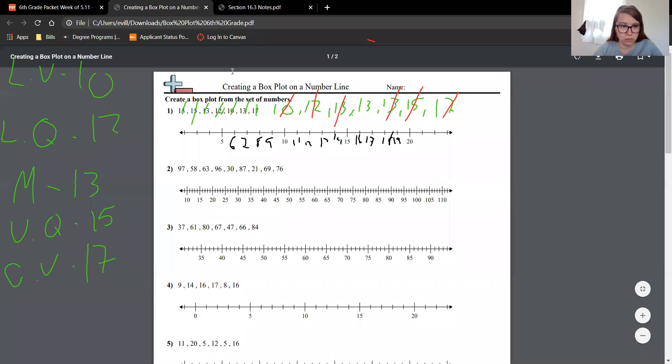So our least value, which would be 10. Our lower quartile, which is 12. Our median, I'm going to make this thicker so you can see better. So least value, lower quartile, median, upper quartile, which is 15. And then our greatest value, which is 17.